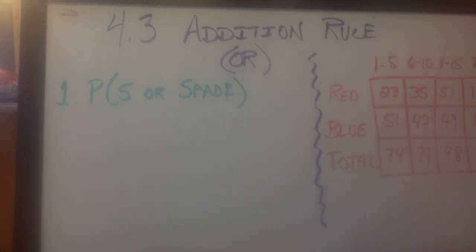Good morning and welcome to 4.3, the addition rule for probability. Basically, the addition rule makes our probability start to expand a little bit. In fact, you've kind of done the addition rule already.